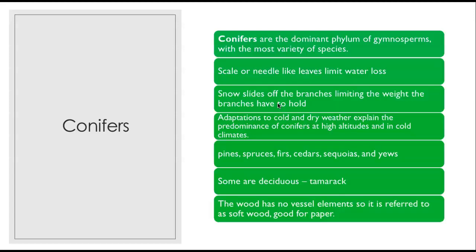Coniferophyta are the conifers — the dominant phylum of gymnosperms with the most variety of species. They have scale or needle-like leaves that limit water loss, snow slides off their branches limiting weight, and they have adaptations to cold and dry weather, explaining their predominance at high altitudes and cold climates. These include pines, spruces, firs, cedars, sequoias, and yews. Some are actually deciduous — tamaracks lose their leaves in winter. The wood has no vessel elements, so it's referred to as softwood, which is good for paper.